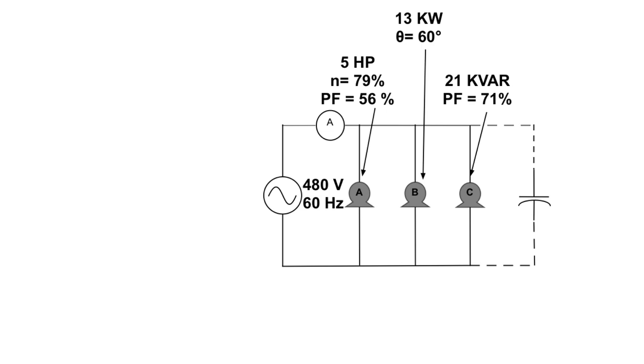So just to get started here, we have a system that's got 480 volts. That's my supply voltage right there. I got these three motor loads here. Now each of these motor loads, I've given you different variables. And so we're going to go step by step what to do with each one of these. This one's a five horsepower motor. This little n here means it has an efficiency of 79%, a power factor of 56%.